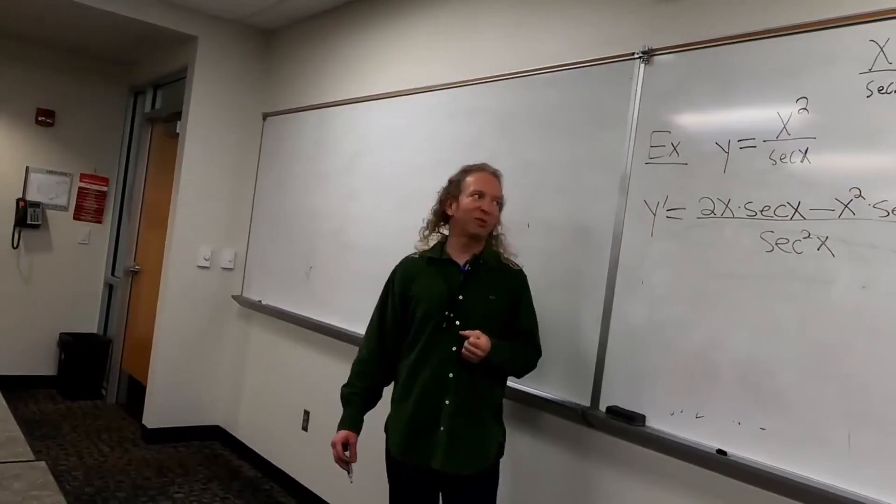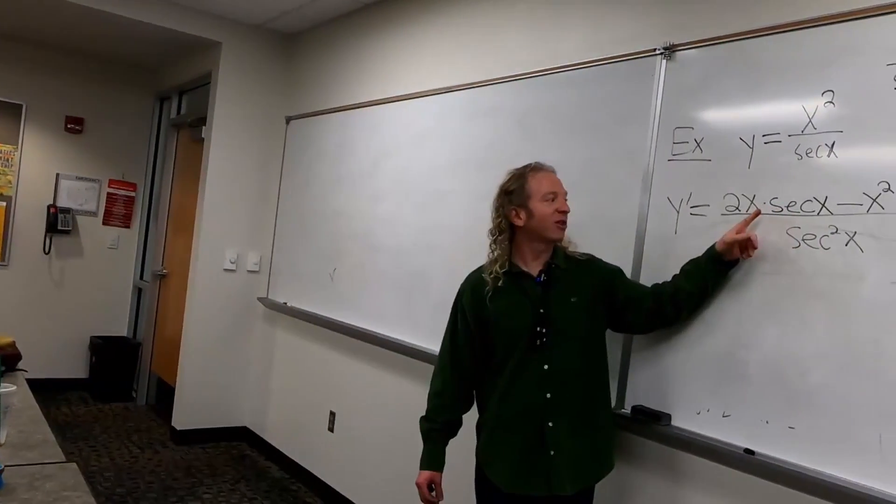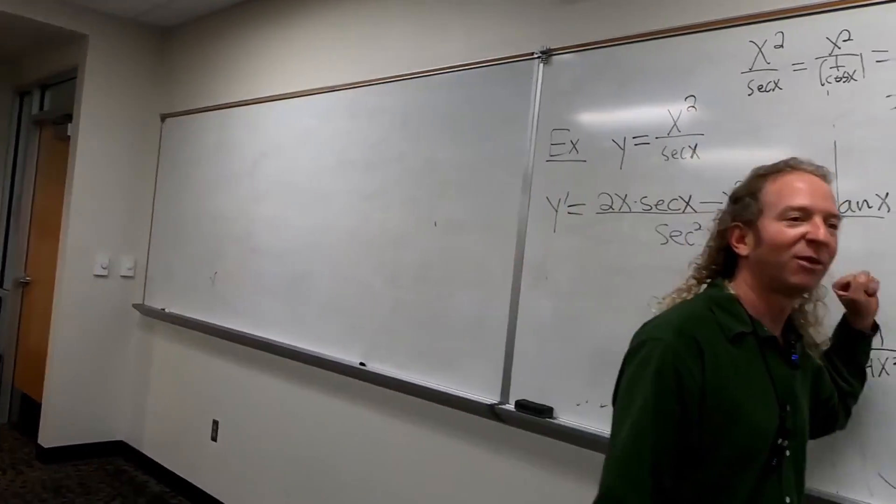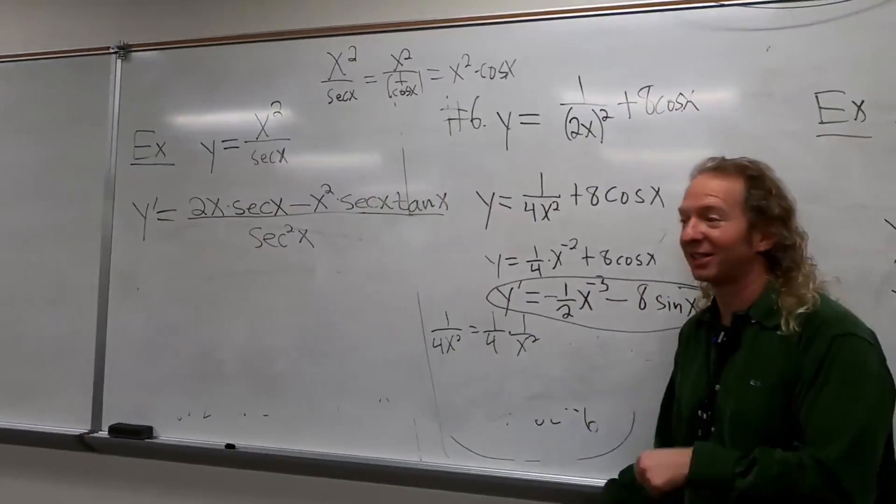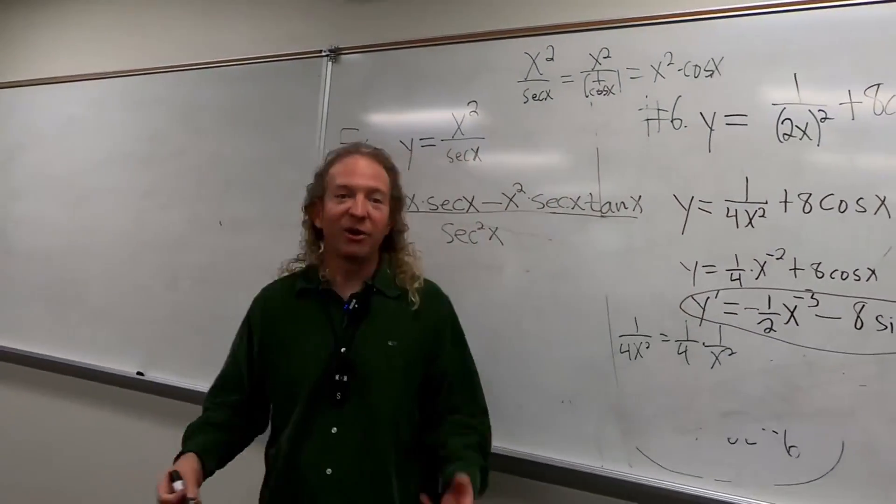And typically there's some simplification to be done. In this case, there is, right? What can we factor out that will cancel in the numerator? What is it? Secant x. Yeah, because there's a secant here, there's a secant here. So we should pull it out. So pull out the secant.